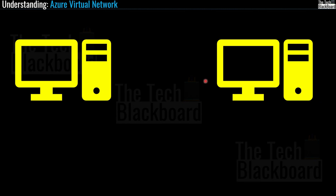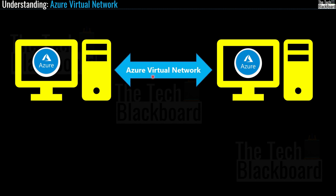Let's say you have two virtual machines. Virtual machines are just like your physical machines — like your laptop — but they exist in Azure cloud. Similarly, Azure virtual networks are a representation of physical network infrastructure available in Azure cloud. As stated in the Microsoft documentation, Azure virtual network is the fundamental building block for communication between your Azure resources, such as virtual machines, to securely communicate with each other over the internet.